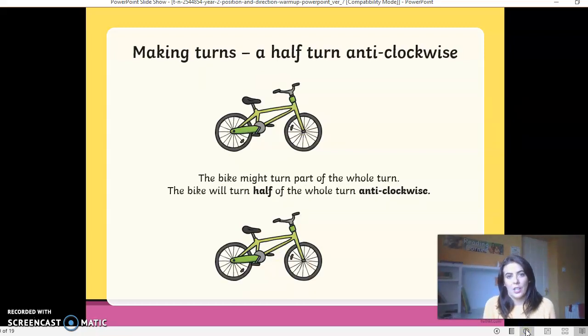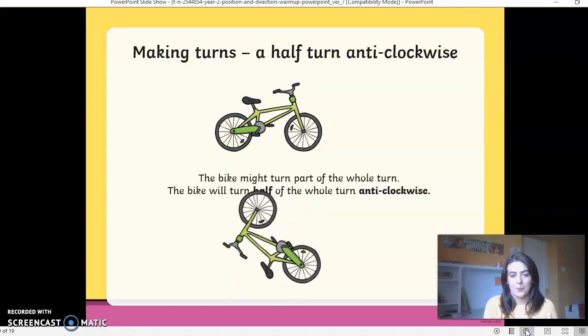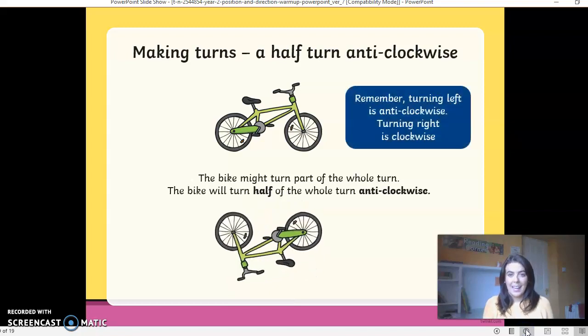So making turns, we're looking at a half turn anticlockwise. So the owl went clockwise. The bike is going to go anticlockwise at a half turn. So let's see where the bike ends up. Well done. Remember, turning left is anticlockwise. And I know that because I have my L here, but remember it's from your eye this side. I know it might look different on my screen down here, but it's from your eyes. If you were to hold it up, you can see the L. Well done.